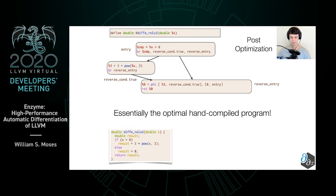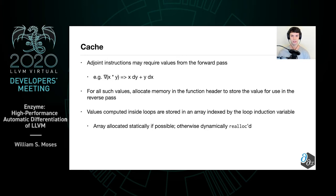However, some of these adjoint instructions may require values that are computed in the forward pass. For example, if you were to take the gradient of x times y, you would get x times dy plus y times dx, requiring both x and y from the original function. For all such values, we're going to go ahead and allocate memory to store these values for later use in the reverse pass. Notably, values computed inside of loops require special handling — we instead create an array indexed by the loop induction variable. This array is allocated statically if possible, otherwise dynamically reallocated, because you might have a different version of the value for every distinct loop iteration.